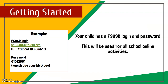To get started, your child has an FSUSD login and password, which will be used for all school online activities. An FSUSD login is the letter S plus your student ID number — for example, s123456@fsusd.org. The password is an eight-digit representation of your birthday: two digits for the month, two digits for the day, and four digits for the year.